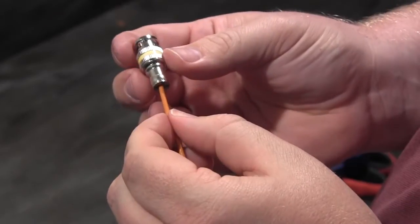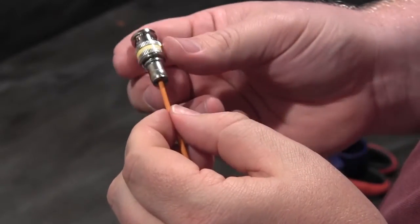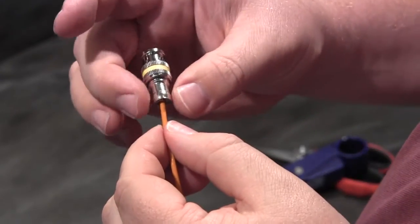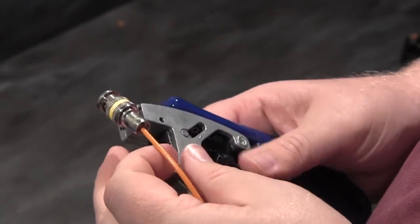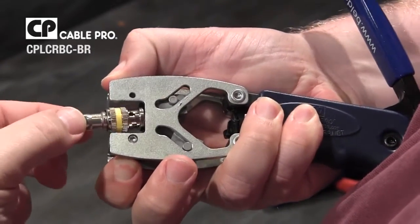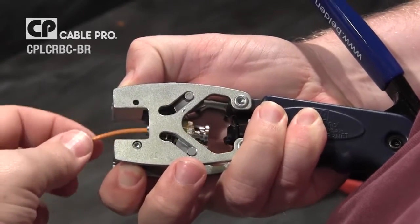That lets me know that I've inserted the cable far enough without any kind of marking on the cable jacket. And the last step is to compress the connector onto the cable, and I'll use my compression tool to do so by simply installing the connector body into the compression tool.